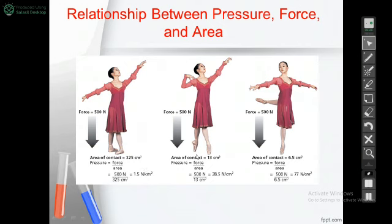In case number two, the ballerina is standing on her two toes, so the area of contact decreases from 325 to 13 centimeters squared. If we calculate the pressure — force over area, which is 500 over 13 — we get a pressure of 38.5 Newton per centimeter squared. The area decreased, so the pressure increased. This is inversely proportional.